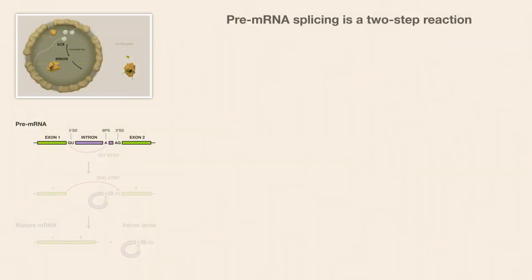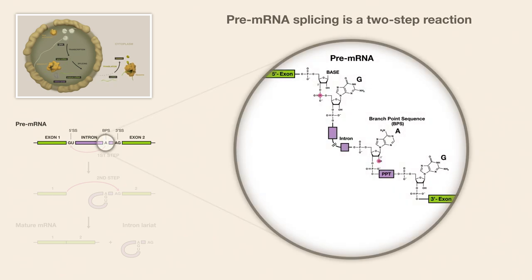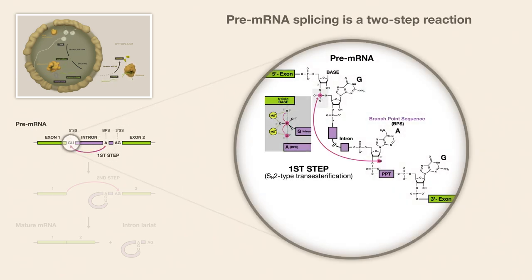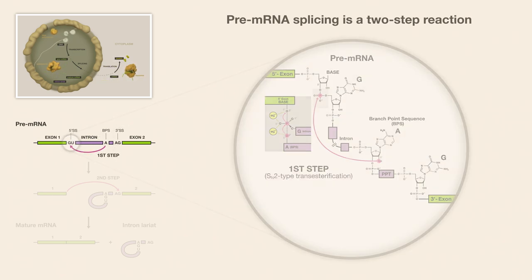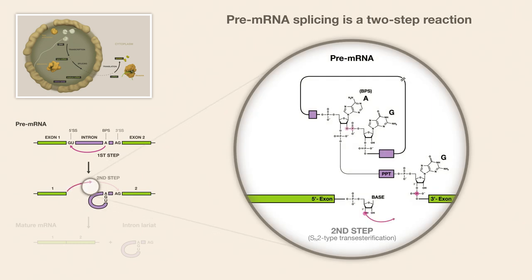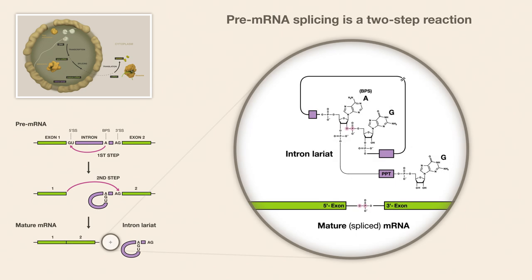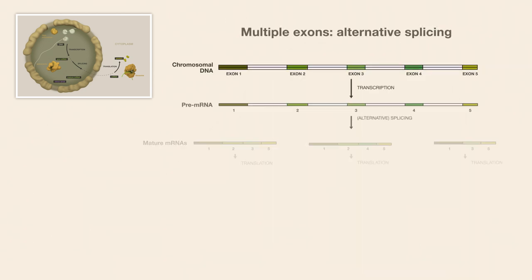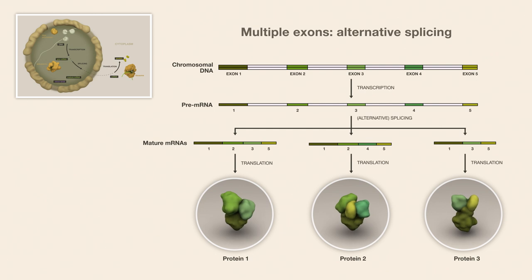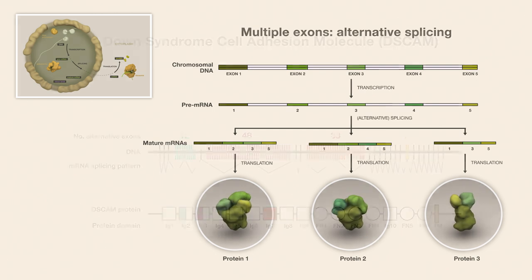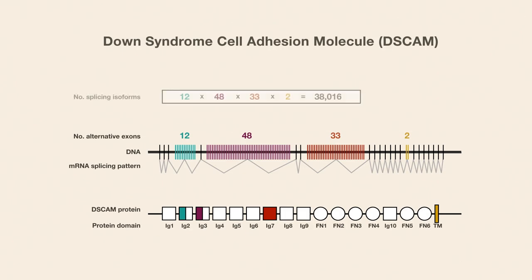Splicing is a two-step reaction. It involves conserved RNA residues of the branch point sequence and the 5' and 3' splice sites found in the intron between two exons that will become part of the mature messenger RNA. Commonly, splicing occurs between multiple exons of a gene and gives rise to protein variants. For example, Down syndrome cell adhesion molecule has over 38,000 possible isoforms in Drosophila.